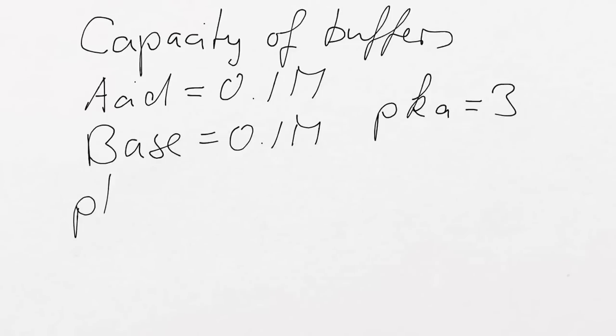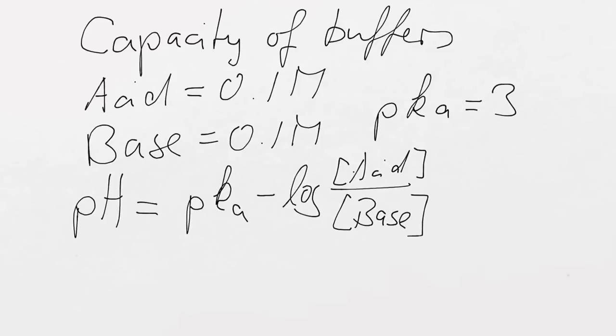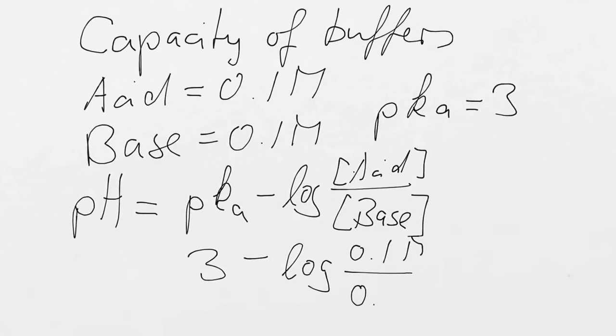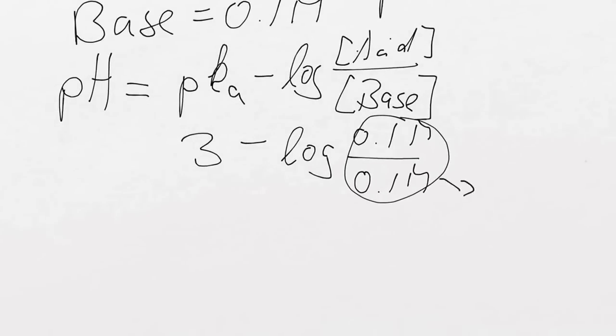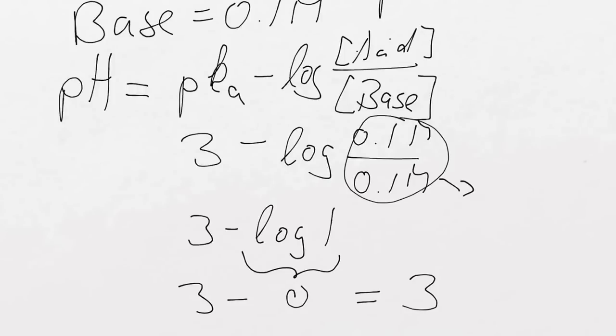Just a quick check. I never trust anyone, not even myself. So we use the Henderson-Hasselbalch equation. pH equals pKa minus log of the acid concentration over the base concentration. So we have 3 minus log of 0.1 molar divided by 0.1 molar. This gives us 1. So we have 3 minus log of 1. Log of 1 gives 0. So the pH is 3. And Sebastian is absolutely right. Wonderful.